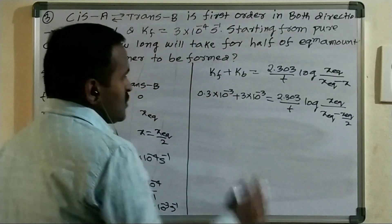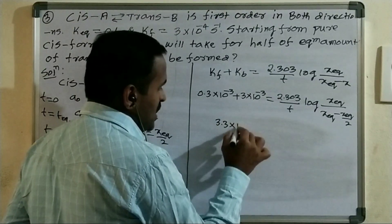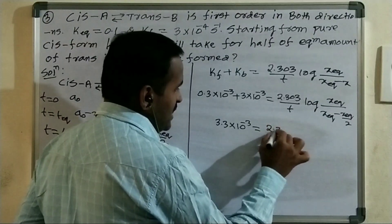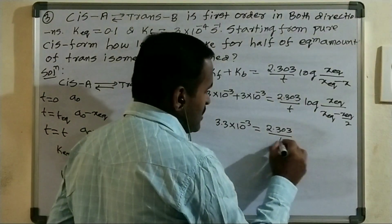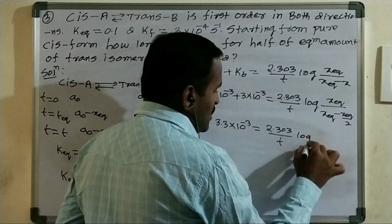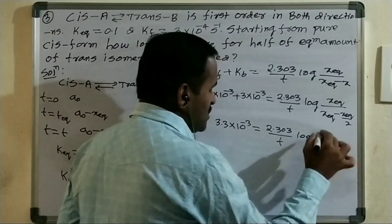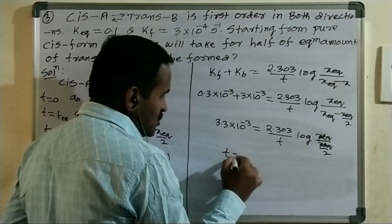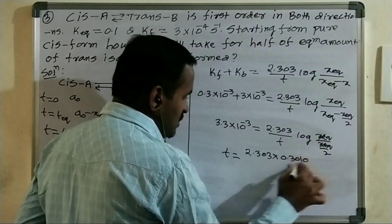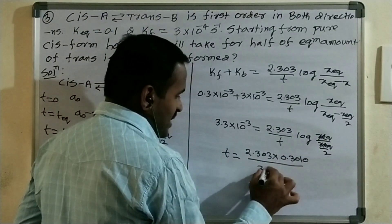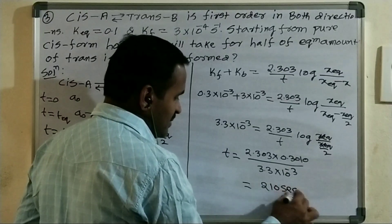The log term simplifies to log(2). So: 3.3×10⁻³ = (2.303/t) × log 2. Therefore t = (2.303 × 0.3010) / (3.3×10⁻³) = 210 seconds.